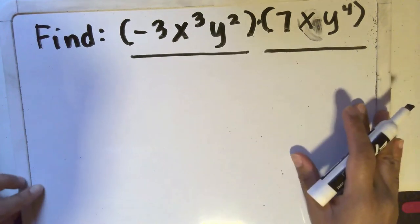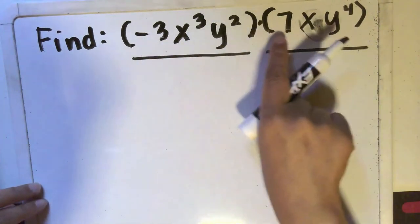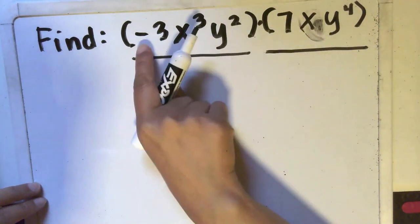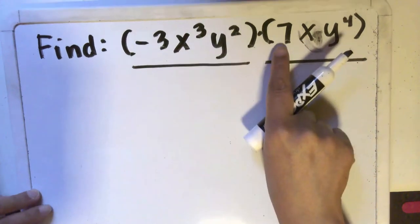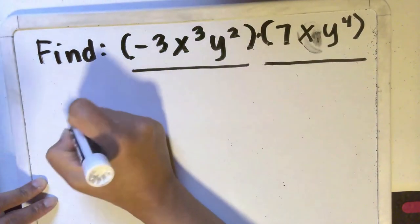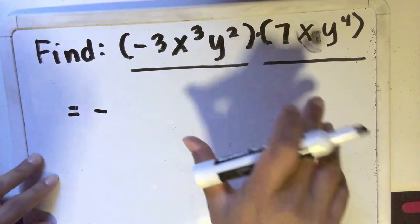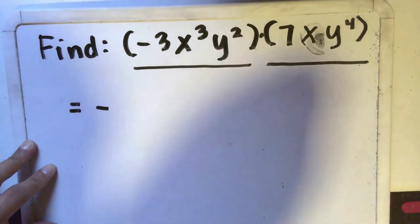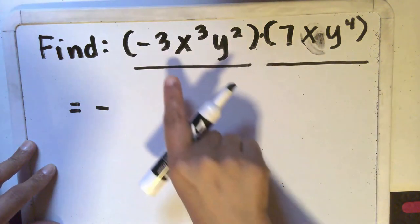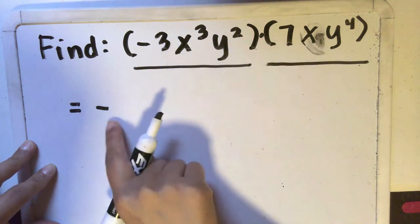So all we're going to do here is first pay attention to the sign. We're multiplying a negative by a positive, so the answer should be negative because we are applying the same rules as multiplying rational numbers or integers. Negative times positive is negative.